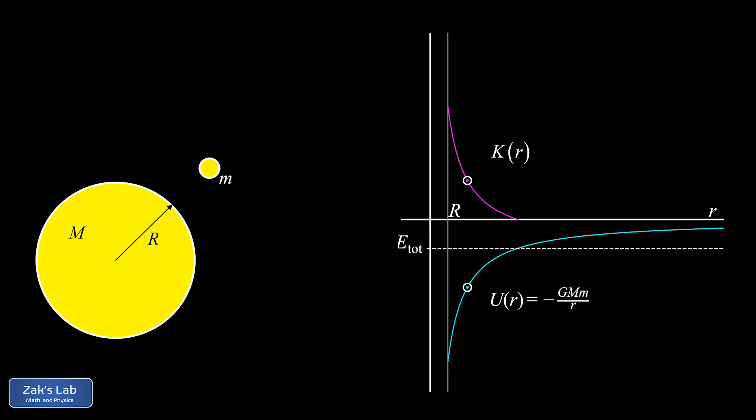So our mass shoots off the surface and slows down. Then it starts running out of kinetic energy. Again, the minimum value of kinetic energy is zero. And that's when the object has zero speed and turns around. And then we crash back into the planet with the same amount of kinetic energy we started with.